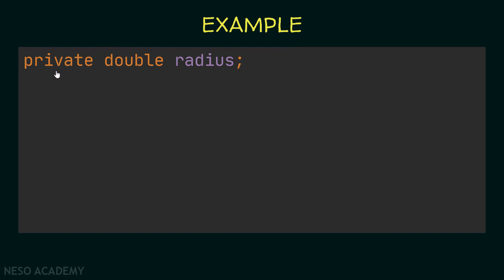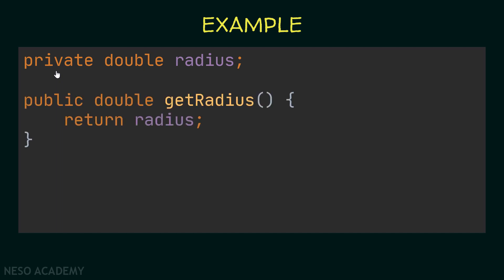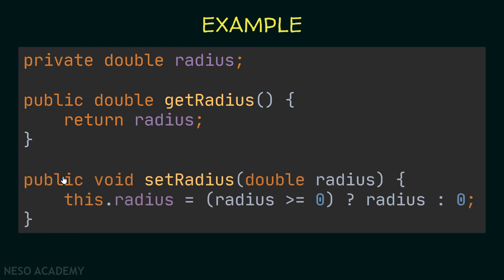Suppose we are inside the circle class and we declare the radius as a private attribute. To get the value of the radius, we create a getter: a public method that returns a double — the same type as the radius — called getRadius, using camelCase notation. It takes no parameters and inside the method we simply return the radius attribute, or we can use 'this.radius'.